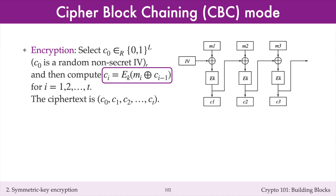So Alice adds the IV to the first plaintext block M1, and encrypts the result to get the first ciphertext block C1. She then adds the ciphertext C1 to the second plaintext block M2, encrypts the result to get C2. Then adds C2 to the third plaintext block, and encrypts to get C3, and so on.